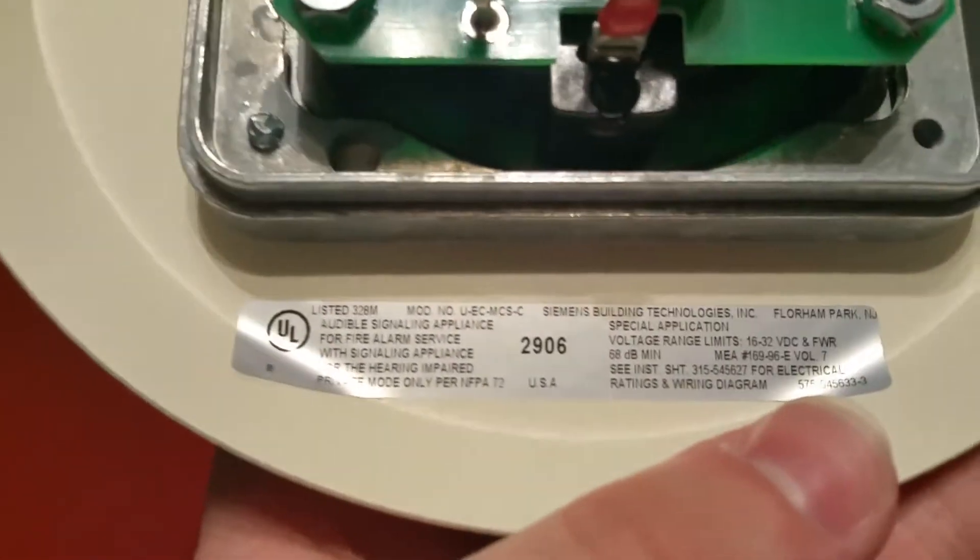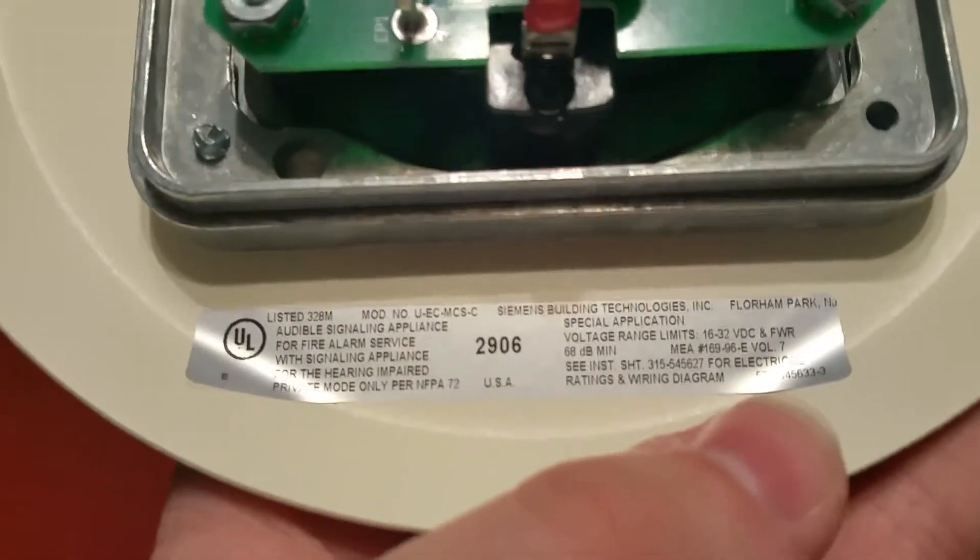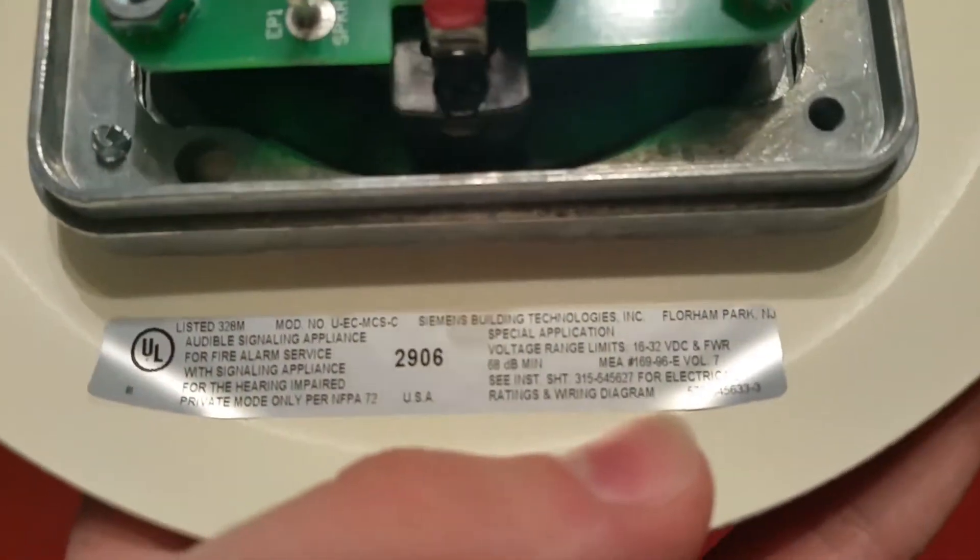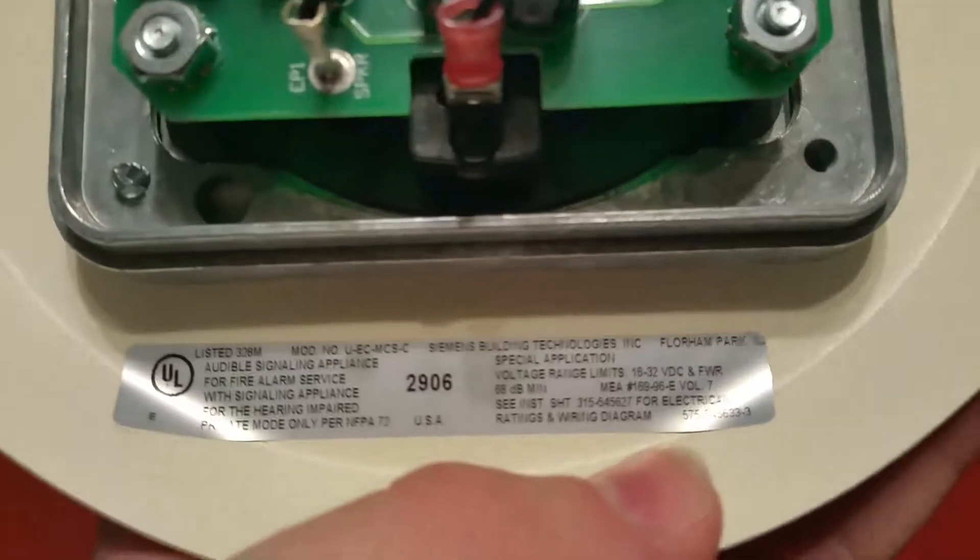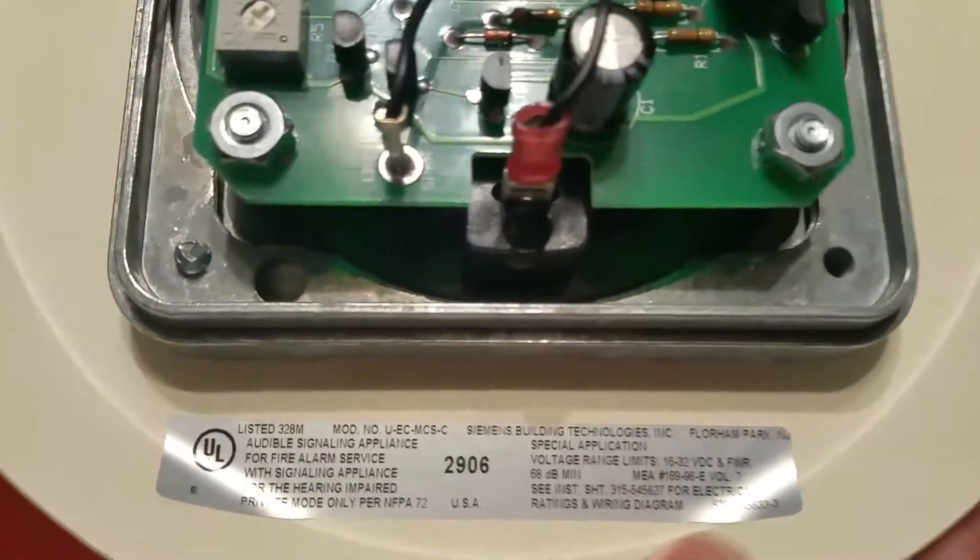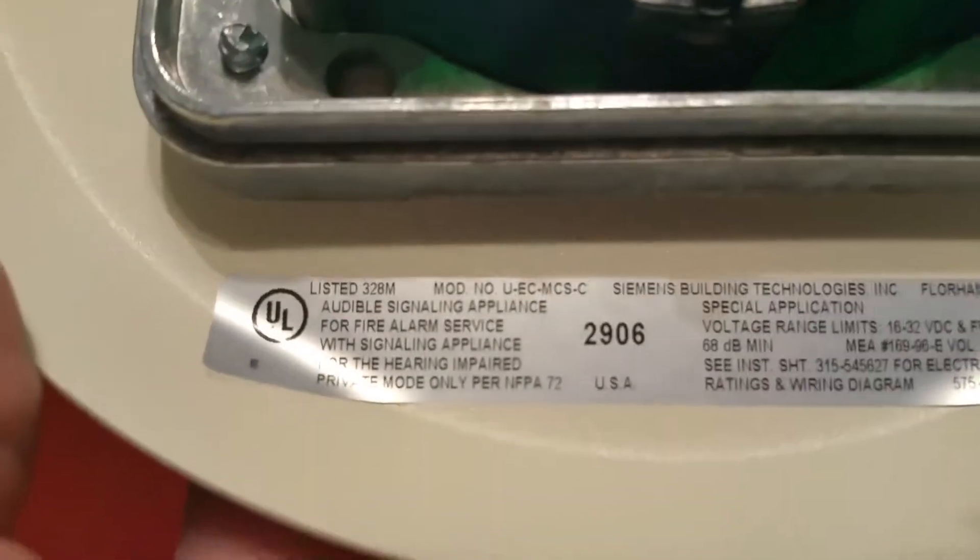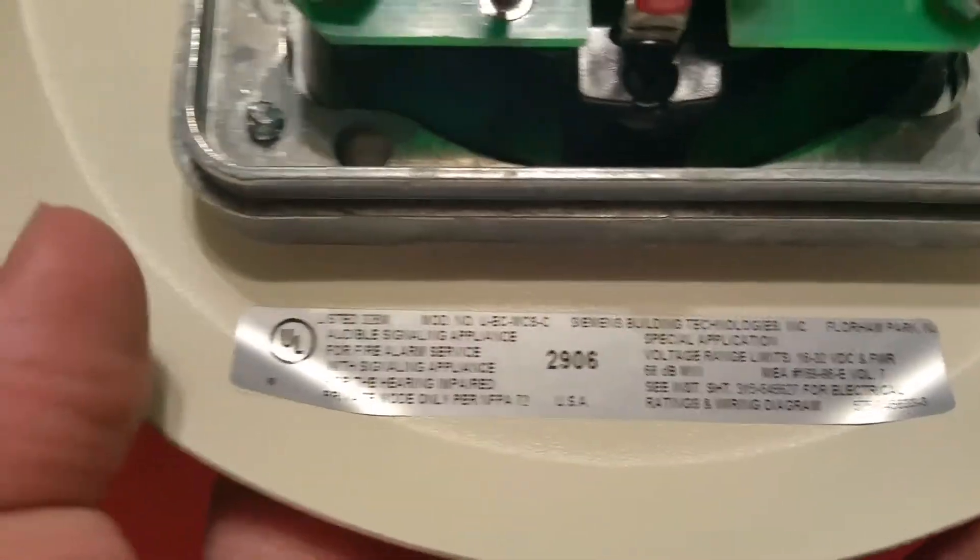This is Siemens U-EC-MCS-C. This is a chime strobe, ceiling-mounted multi-candela, with signaling compliance for the hearing impaired private mode only per NFPA 72.